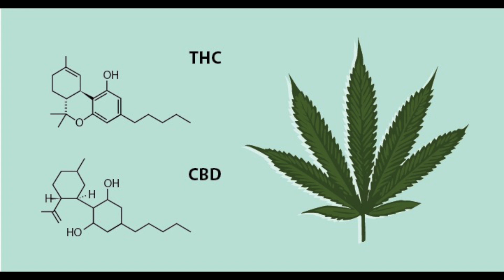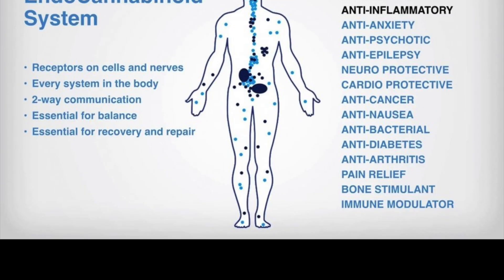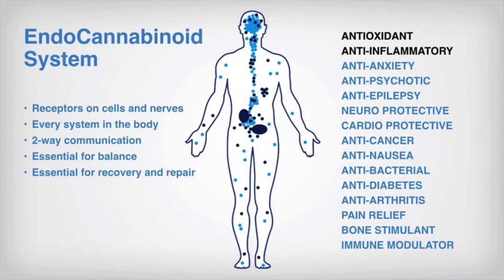While many different cannabinoids exist, they all fall under two categories: endogenous or exogenous. Endogenous means originating inside the body, also known as endocannabinoids. These compounds are produced naturally by the human body. They interact with the cannabinoid receptors to regulate basic functions including mood, memory, appetite, pain, sleep, and many more.